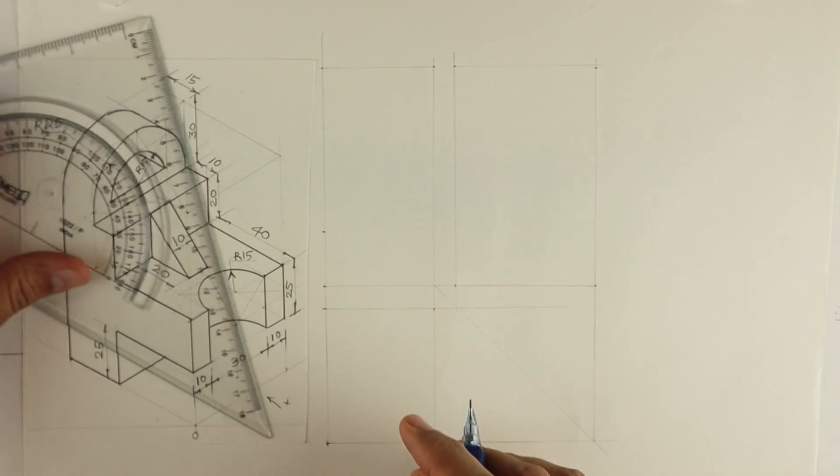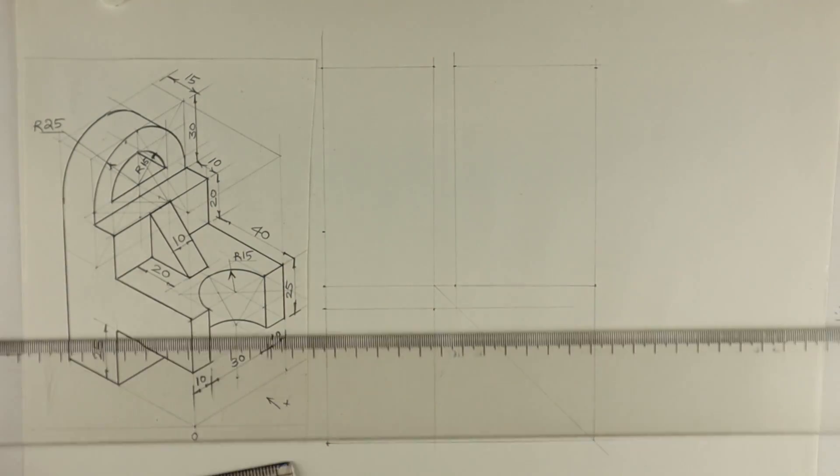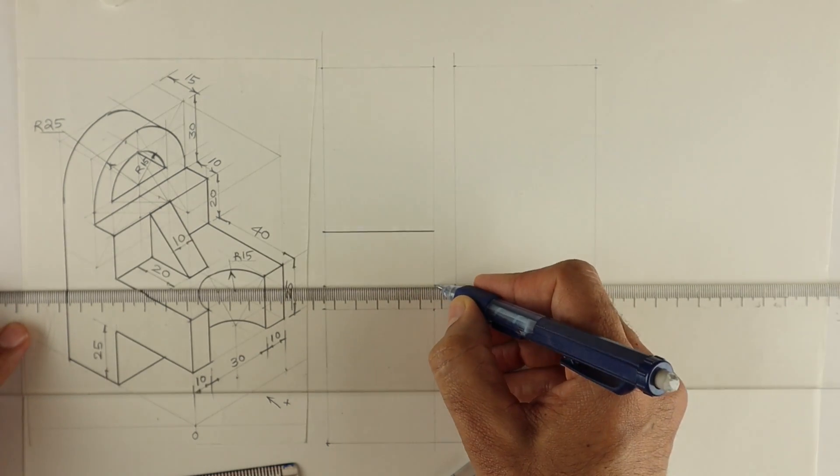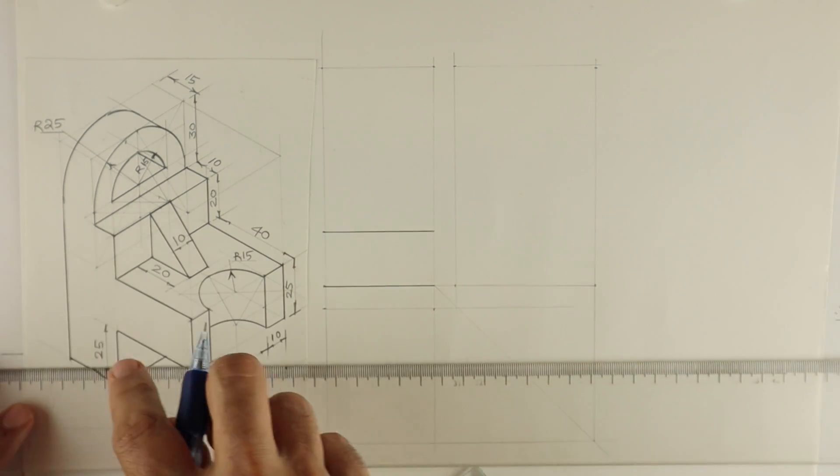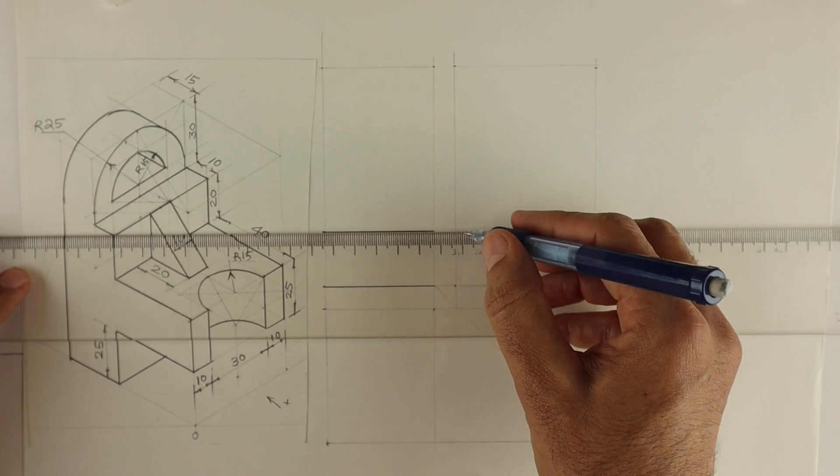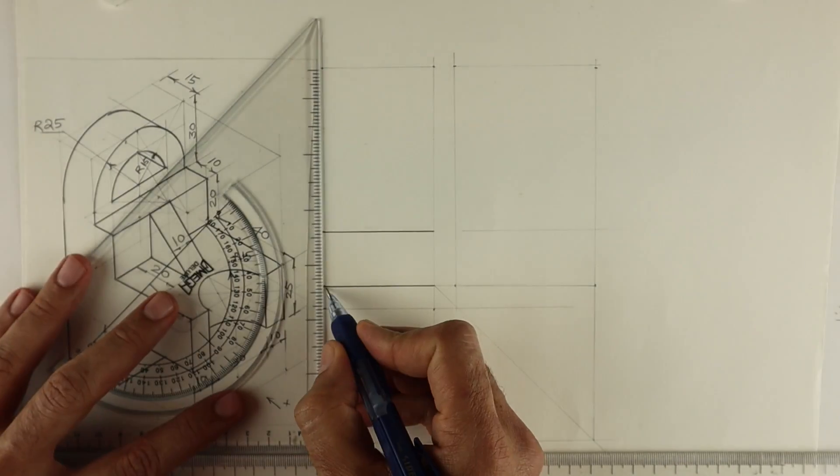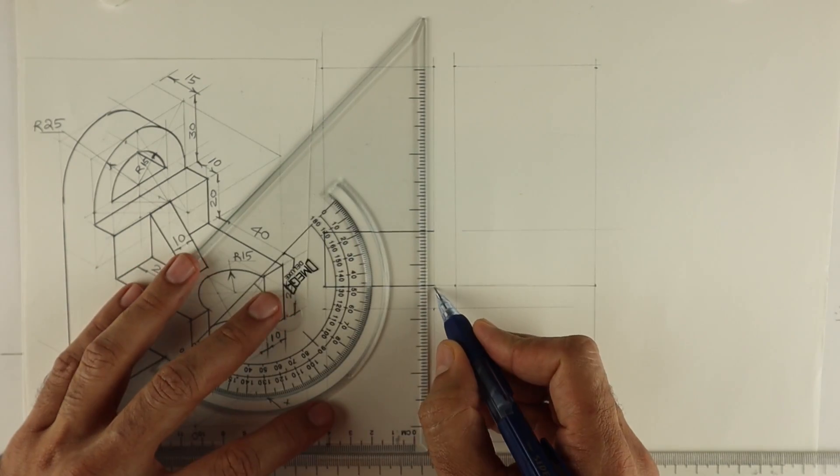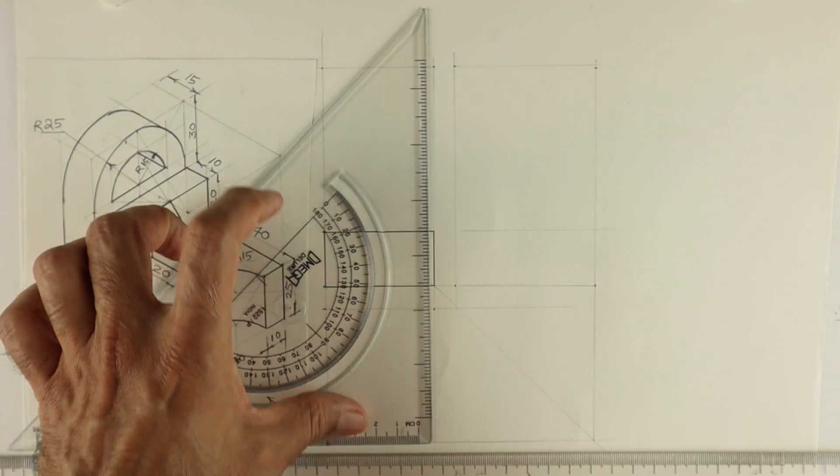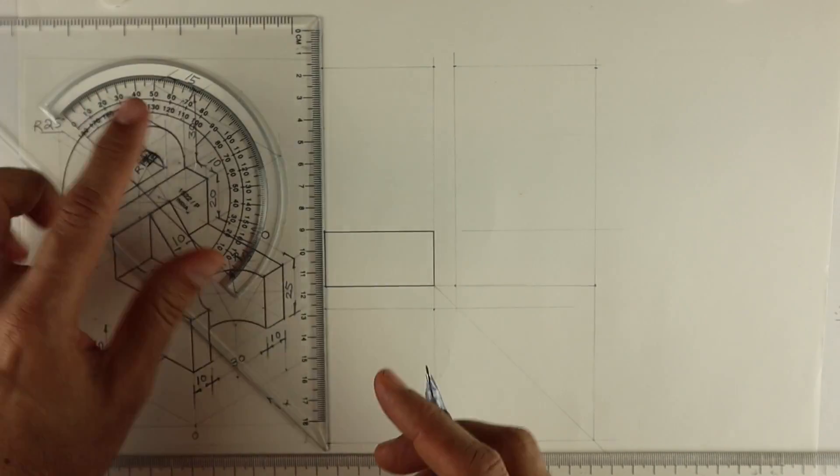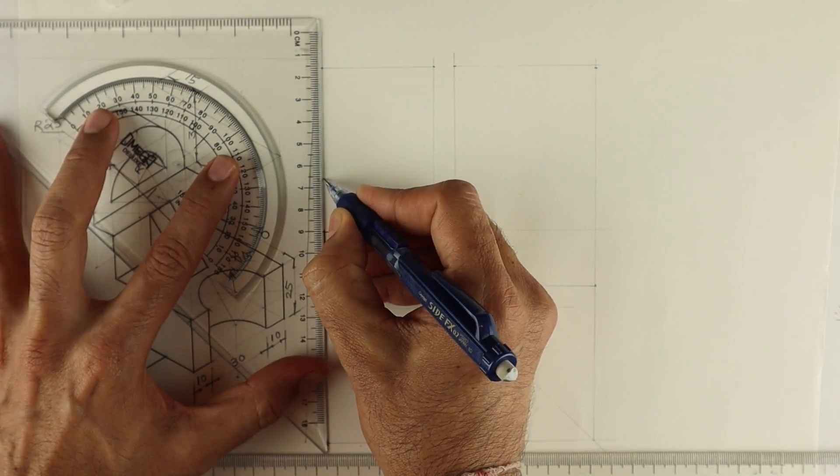In my front view, first we will draw 25. See this 25, this block. Then this 10, 30, 10, so again I will go up by 25.